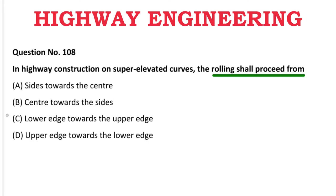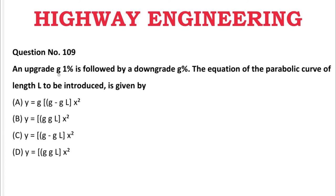Next question: An upgrade G1% is followed by a downgrade G%. The equation of the parabolic vertical curve of length L is given by — A: y = G(G − G/L)x², B: y = G·G/L·x², C: y = (G − G/L)x². The correct answer is B, y = G·G/L·x².